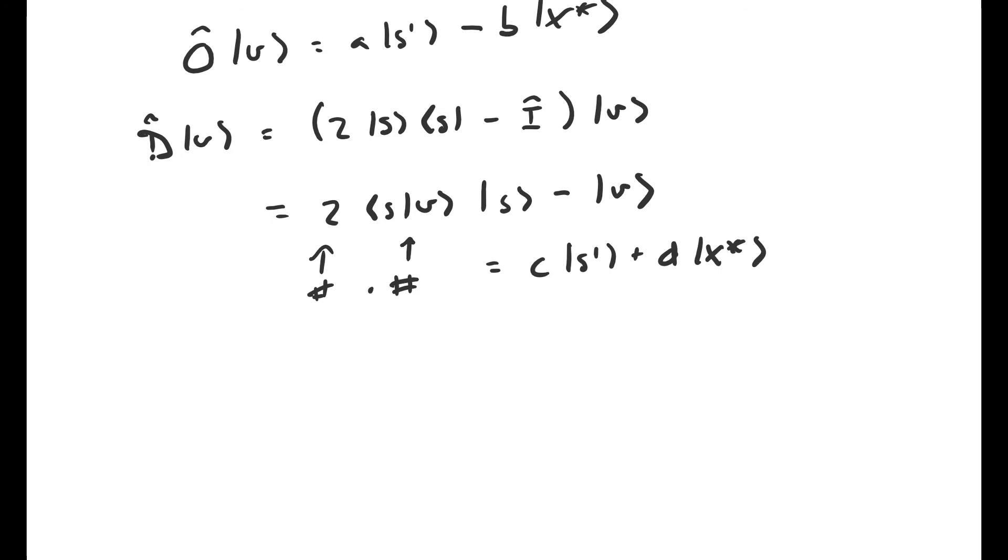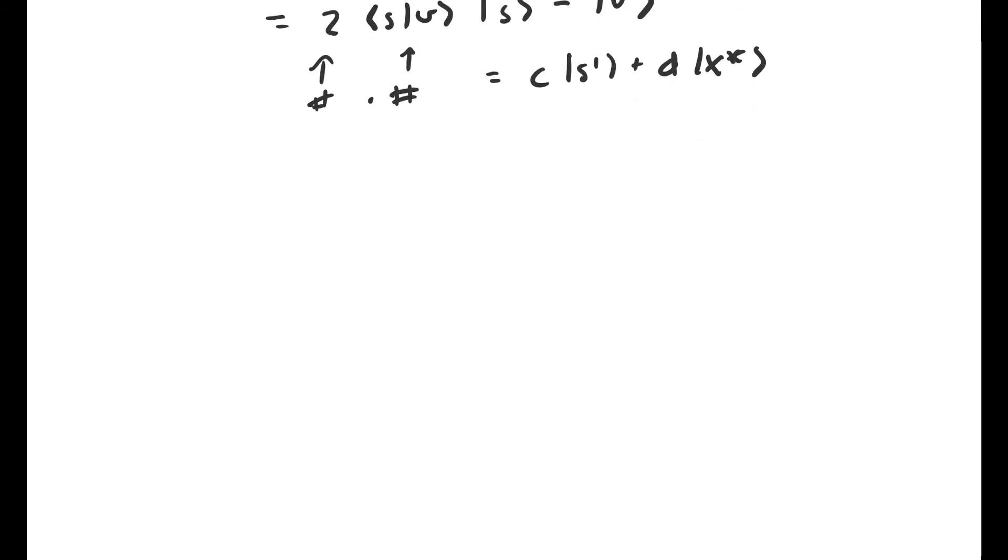So that is just to prove that if we have some vector that's in the subspace spanned by s prime and x star and we act on it with O, we'll get another vector in this subspace. And if we act on that vector with operator D, we get another vector in the subspace. So if we start out with a vector in the subspace spanned by s prime and x star, then after applying both O and D, we're left with another vector that's also in the subspace.